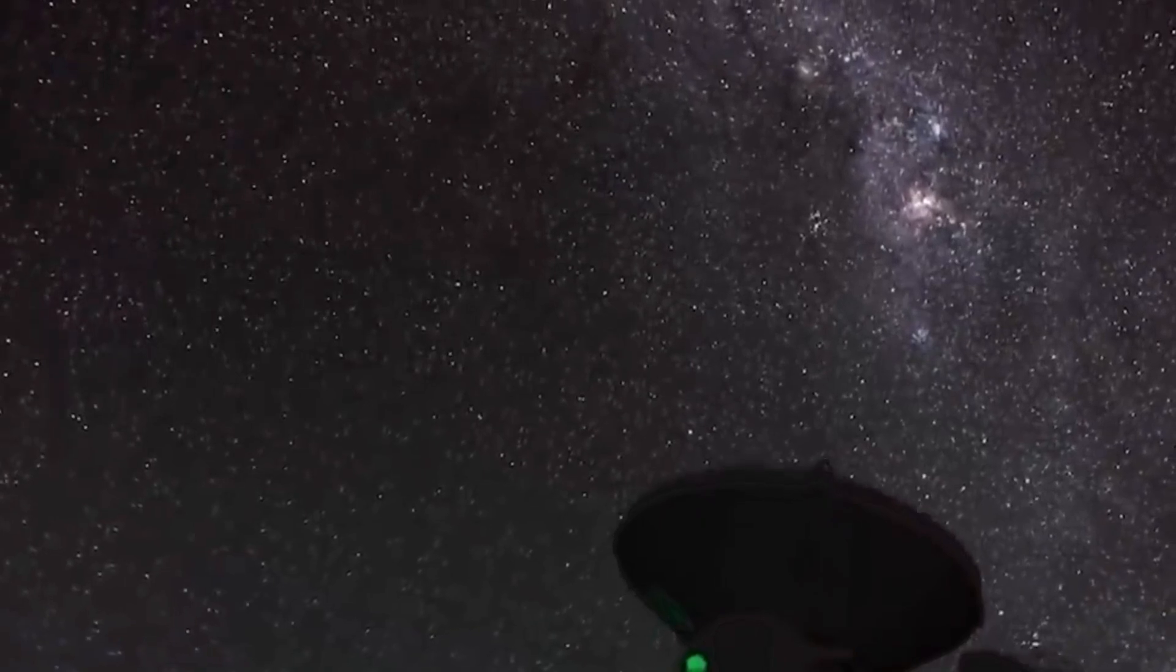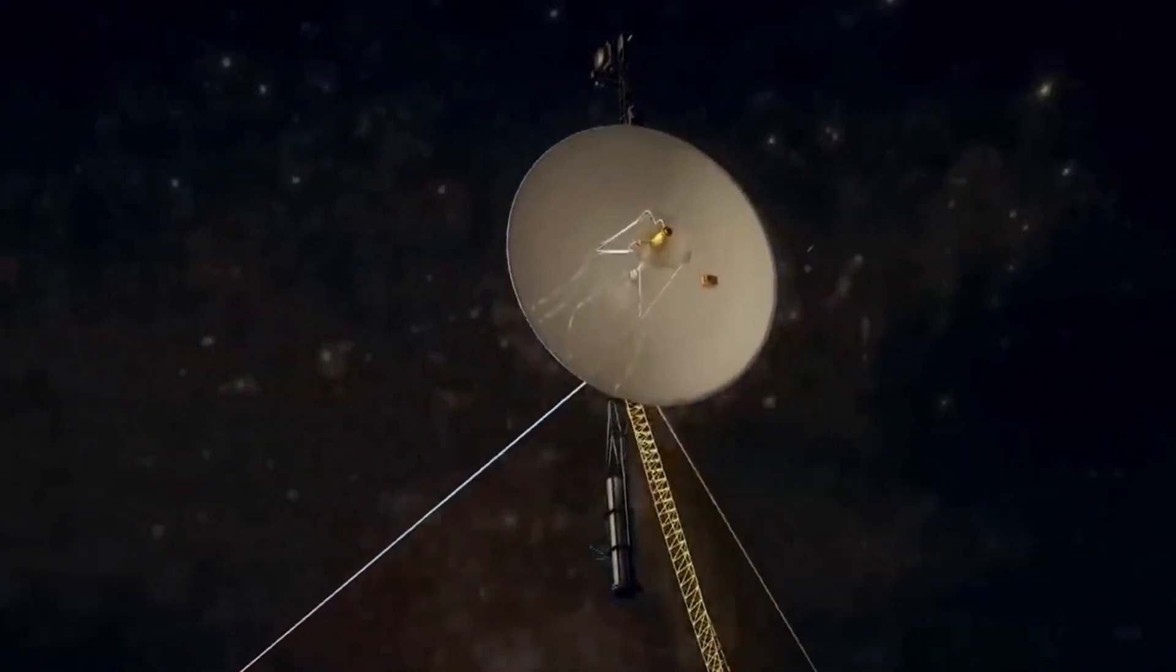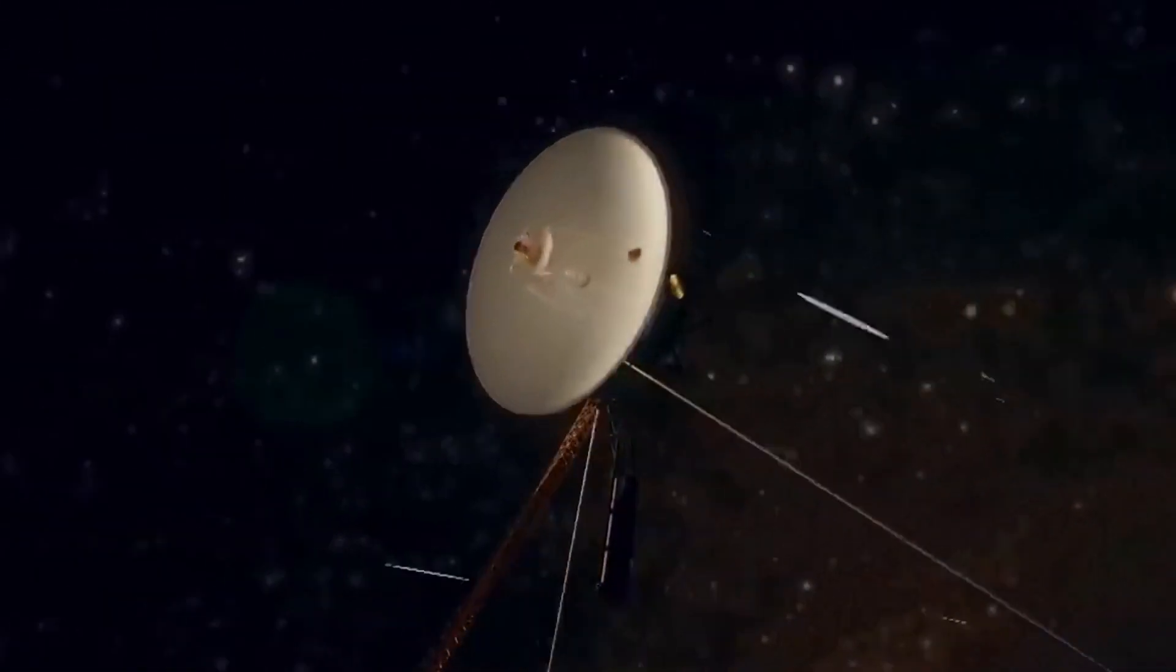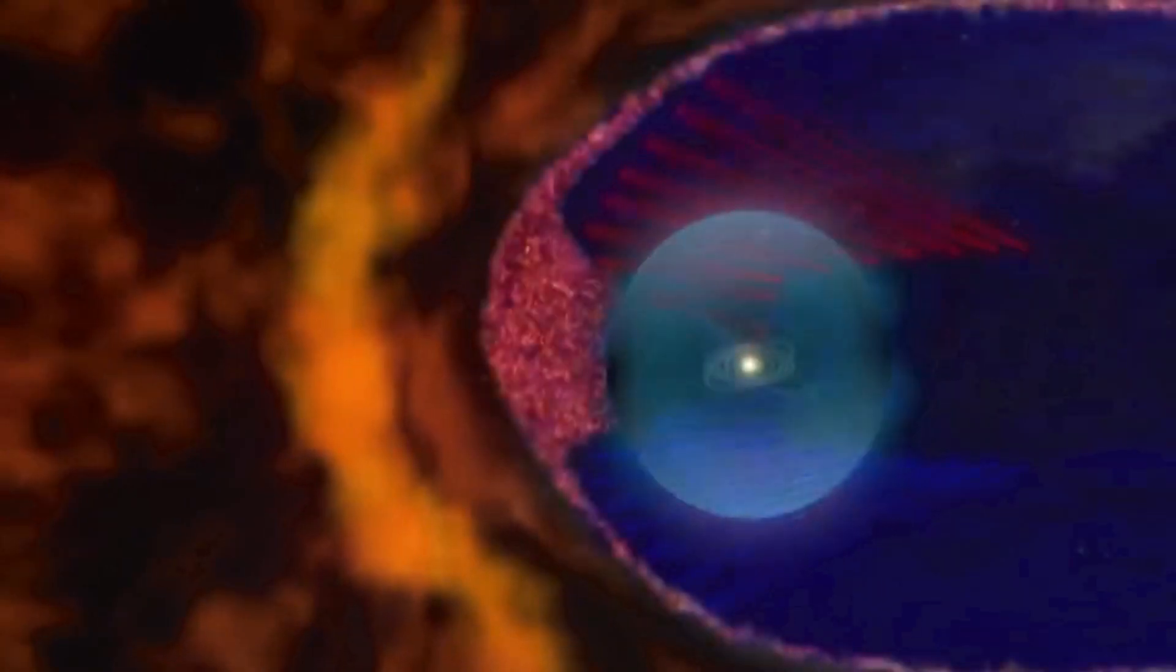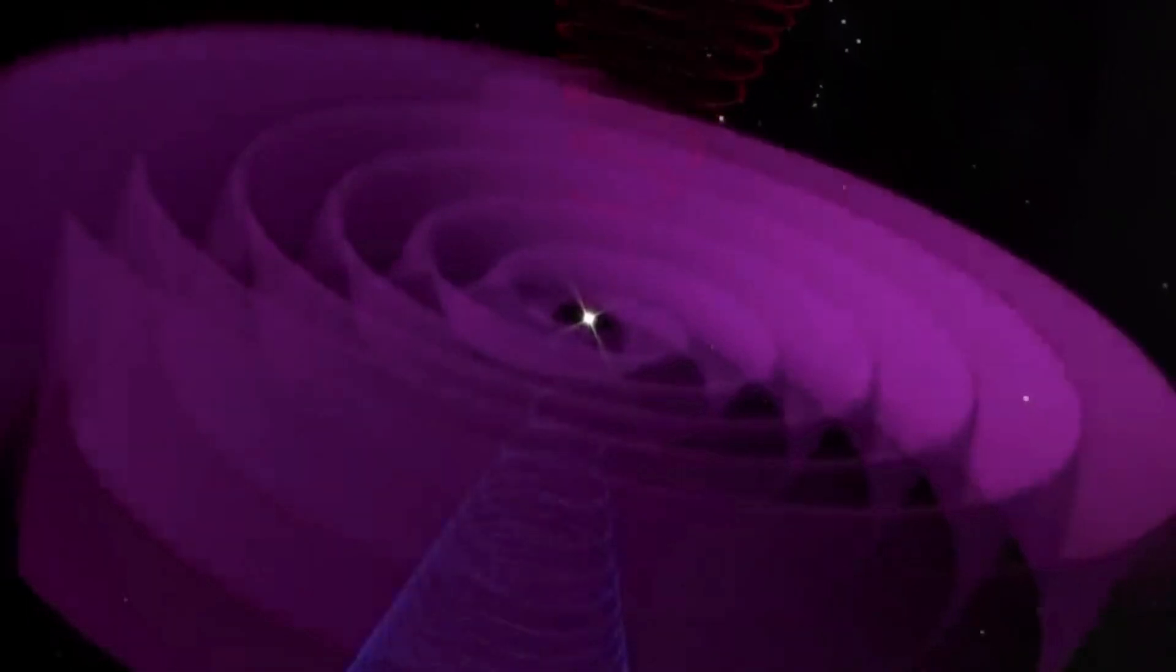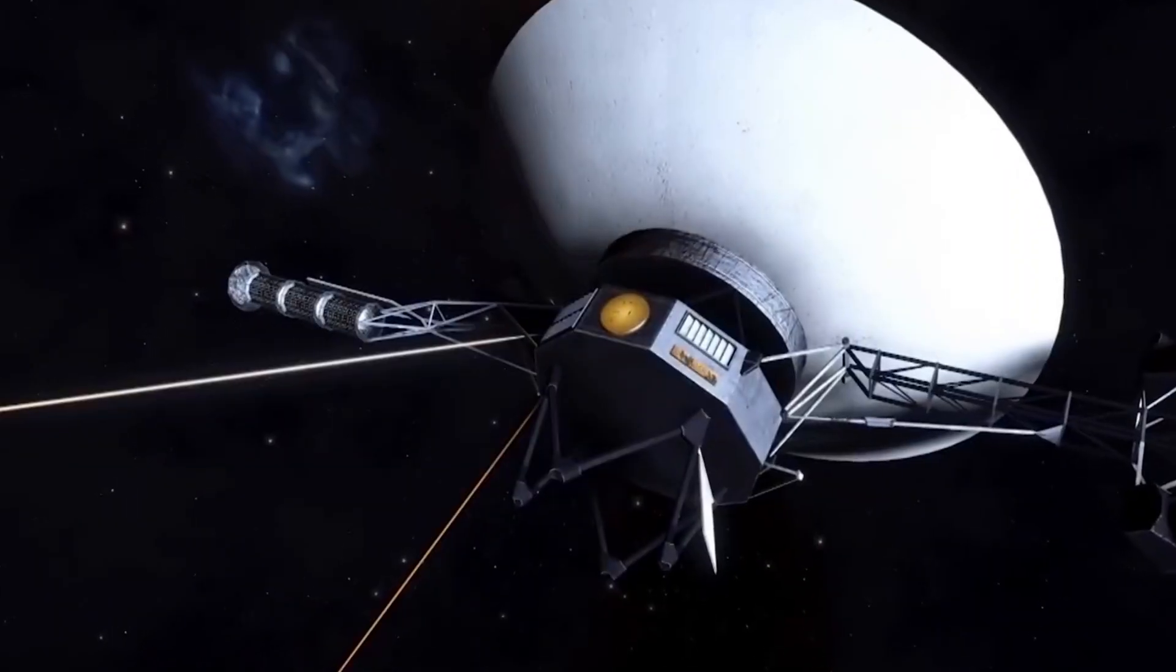In 2017, Voyager 1's primary thruster showed signs of degradation, so engineers switched to another set of thrusters that had originally been used during the spacecraft's planetary encounters. Those thrusters worked, despite having been unused for 37 years.